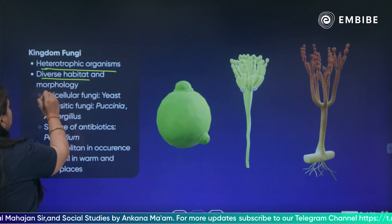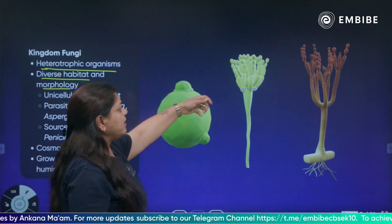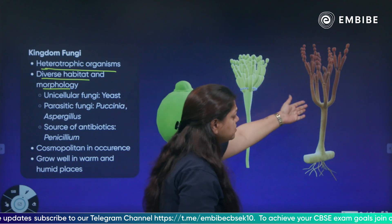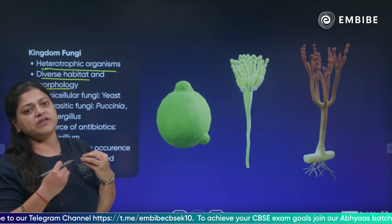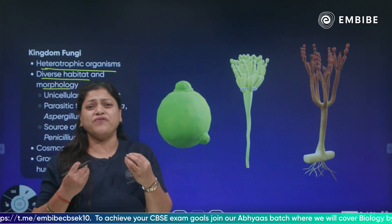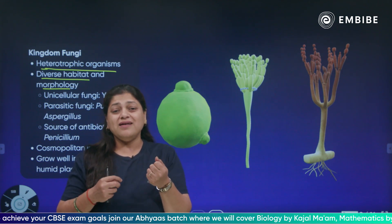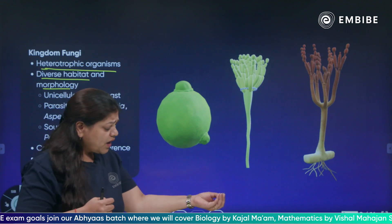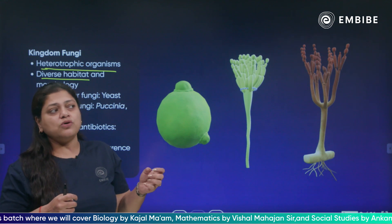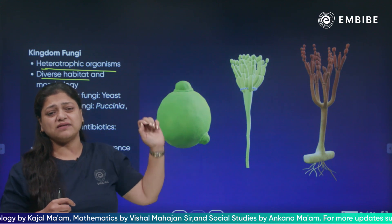Fungi show diverse habitat and morphology. If you look at fungi, their morphology is different. You can see that bread turns black — that is known as fungus on food. Mushroom is also a type of fungi, and there are different types of mushrooms. Sometimes on wet walls you can see a whitish growth — that is also a fungus.